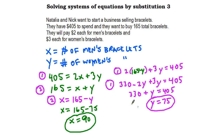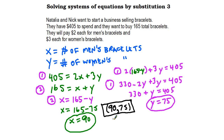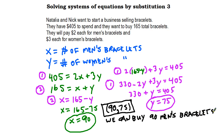For word problems like this, we're less concerned about the ordered pair, but the answer is (90, 75). Really though, that's not the final answer on its own — there's no question stated. But the meaningful result is: we can buy 90 men's bracelets and 75 women's bracelets. That's the whole point of this math. Hopefully you enjoyed that.